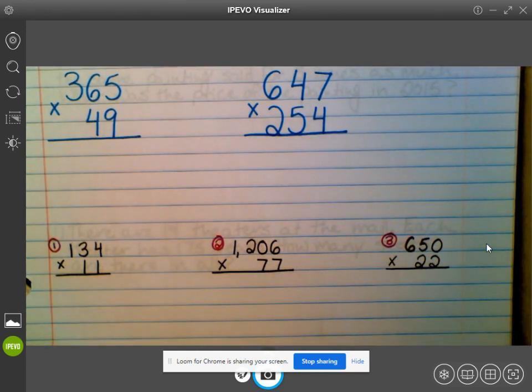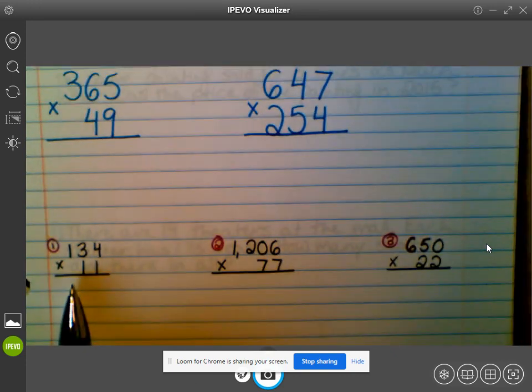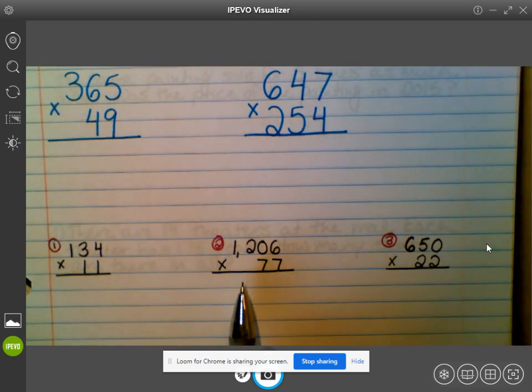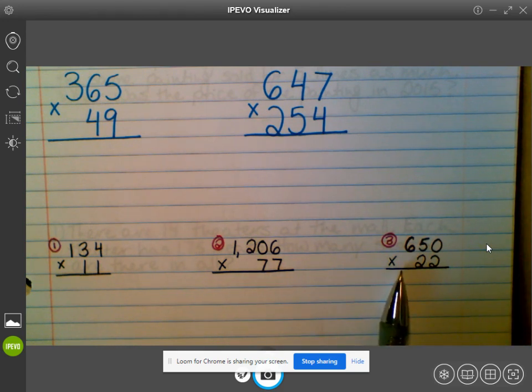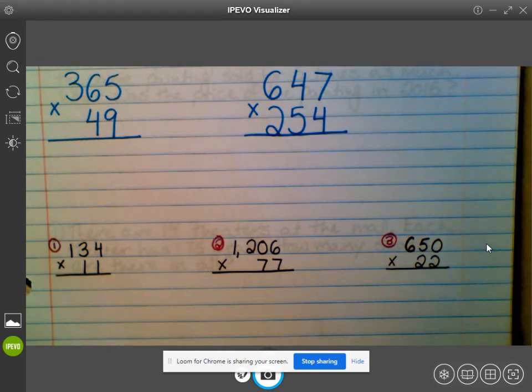Go ahead and put a thumbs up on your desk when you have your title and all the practice problems written down, but you have not solved them yet. So I know up there it's a little fuzzy. Number one is 134 times 11. Number two is 1,206 times 77. And number three is 650 times 22.